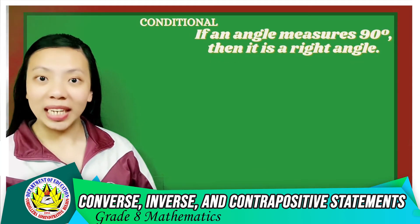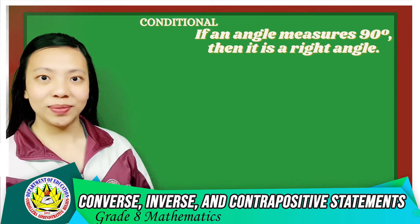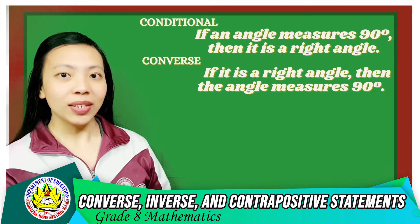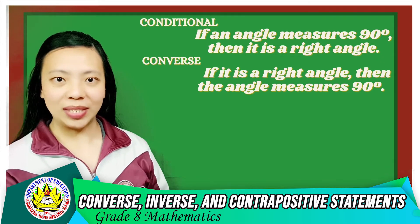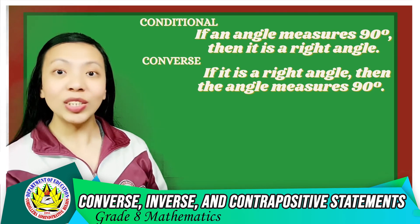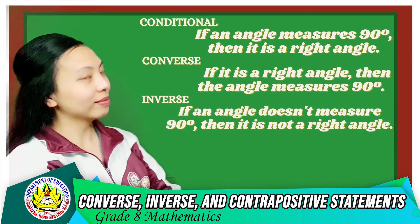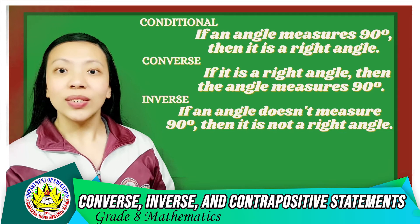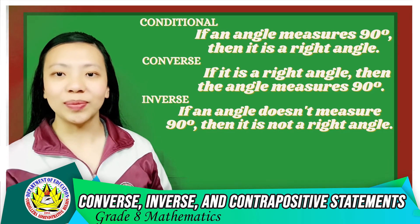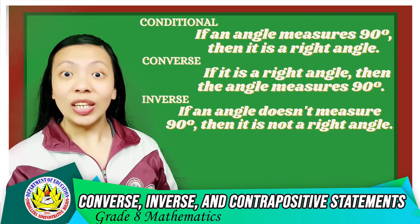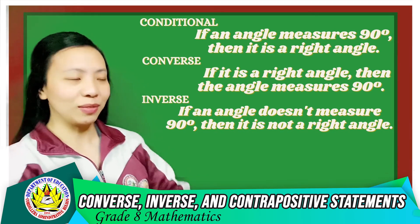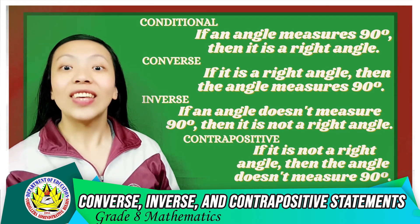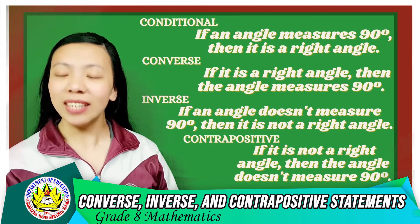Here are the related statements of the given conditional. The converse is: 'If it is a right angle, then the angle measures 90 degrees.' The inverse is: 'If an angle doesn't measure 90 degrees, then it is not a right angle.' And the contrapositive is: 'If it is not a right angle, then the angle doesn't measure 90 degrees.'